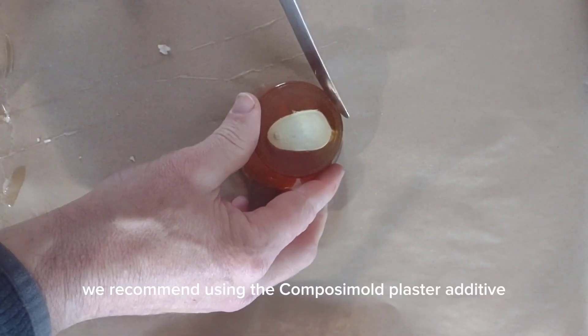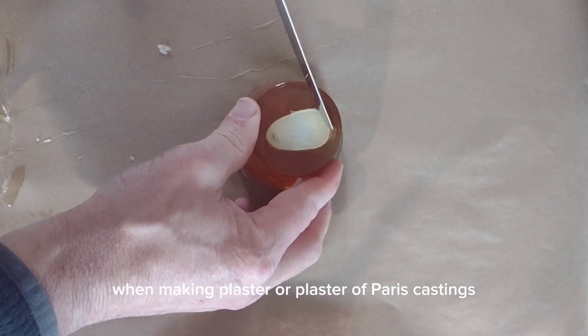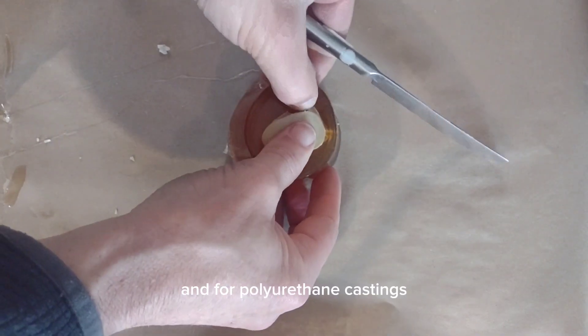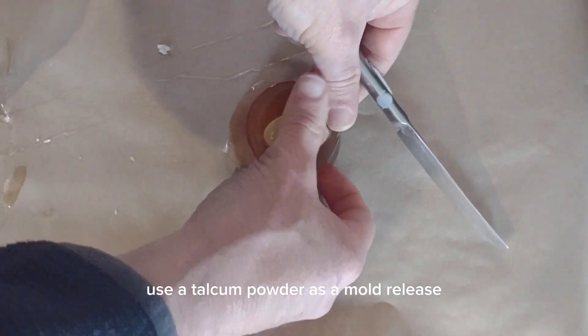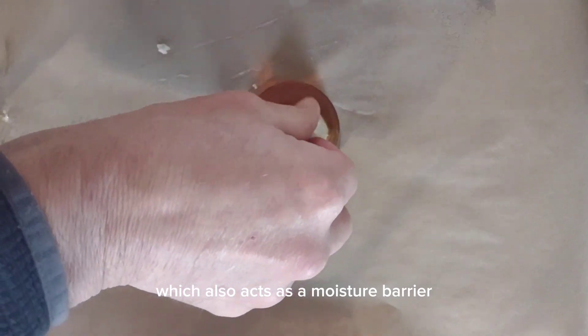We recommend using the composite mold plaster additive when making plaster or plaster of Paris castings. And for polyurethane castings, use talcum powder as a mold release which also acts as a moisture barrier.